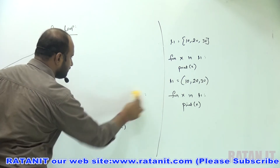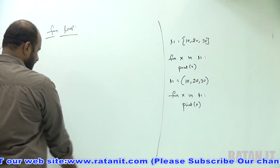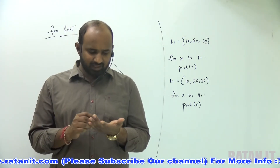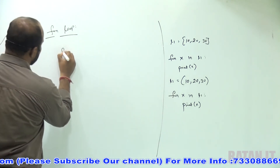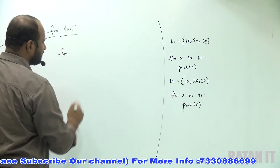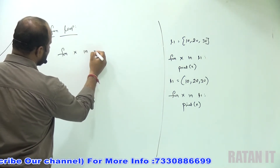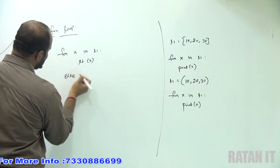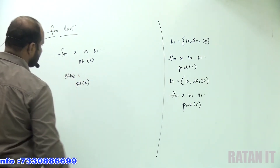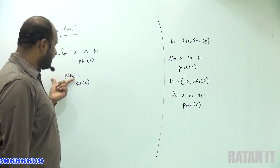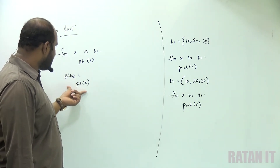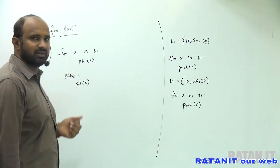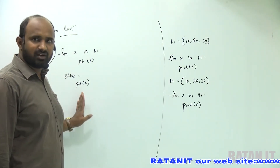Observe one more point: while declaring the for loop, along with the for loop you can also give an else block. For x in sequence data l1 — statements — else — statements. This else block is executed always if the for loop is executed normally. Whenever the for loop is executed normally, automatically the else block will be executed.